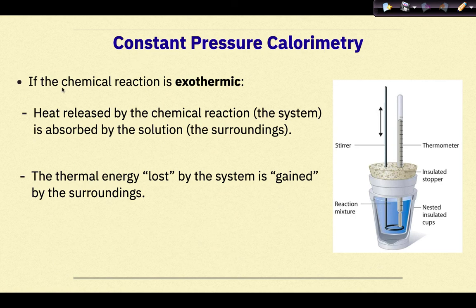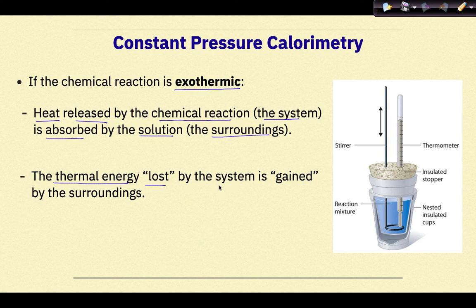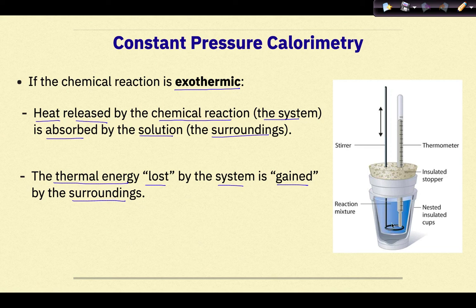If the chemical reaction is exothermic, heat released by the chemical reaction, the system, is absorbed by the solution, the surroundings. The thermal energy lost by the system is gained by the surroundings. Looking at the diagram, we have our stirrer, a thermometer, an insulated stopper, nested insulating cups, and a reaction mixture. The system is the chemical reaction at the particulate level, so we can't see it. We can see the surroundings — the solution — so the thermometer is measuring the temperature of the solution. In an exothermic reaction, we would see the temperature increase as measured by the thermometer.